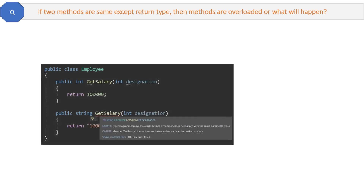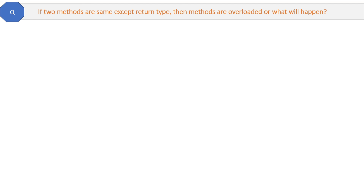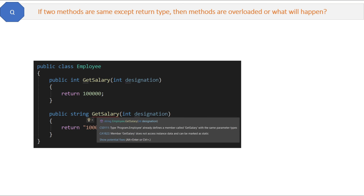Here is a scenario-based question: if two methods are the same except for the return type, are the methods overloaded or what will happen? Many think that if the return type is different this is overloading, but if you see the code here — same name methods with same parameters but different return types — this is not overloading and it is not accepted by the .NET framework. You can see the compile-time error here. So the answer is no, this will show a compile-time error and it is not possible.